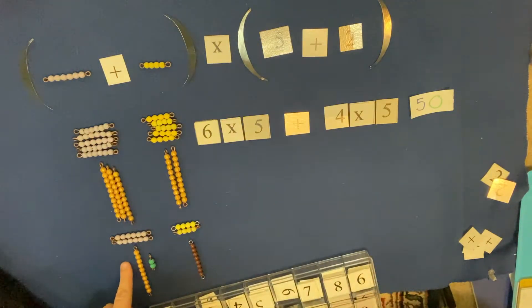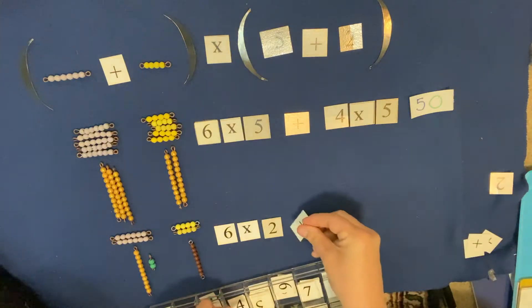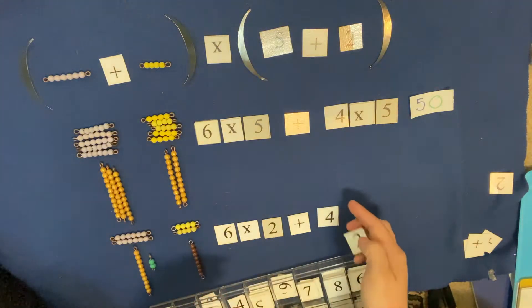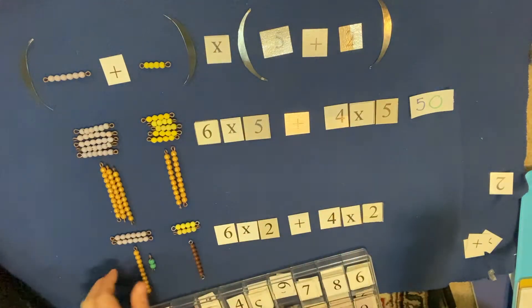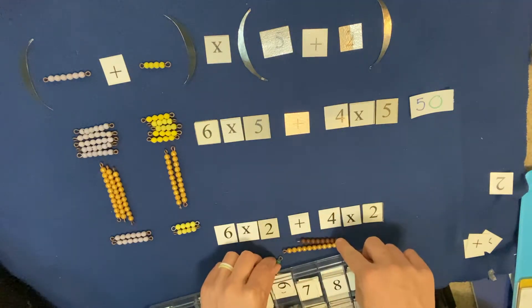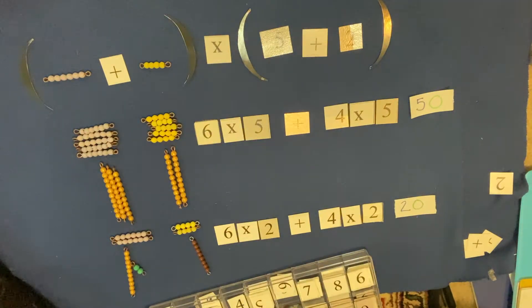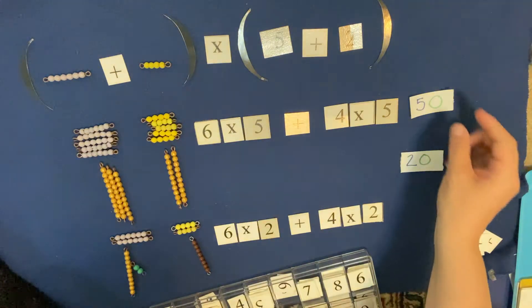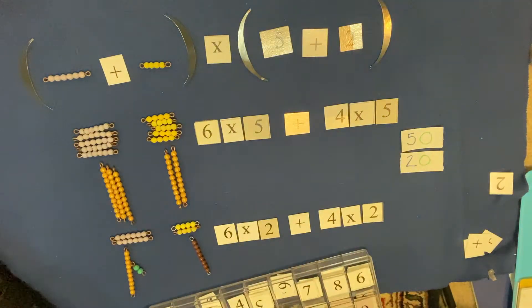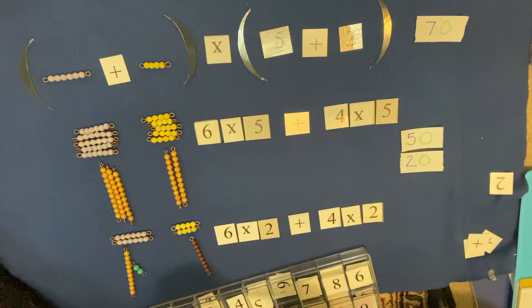When we add these together we know this is thirty, this is twenty, so we push it all together. We have ten, twenty, thirty, forty, fifty—that equals fifty. Now here we did six times two, and then we did plus four times two. So we need to add these together. What is this equal? We have ten through twenty—equals twenty. And we know in order to get this answer we have to put our twenty and fifty together. So what is twenty plus fifty? It equals seventy. So six plus four times five plus two equals seventy.